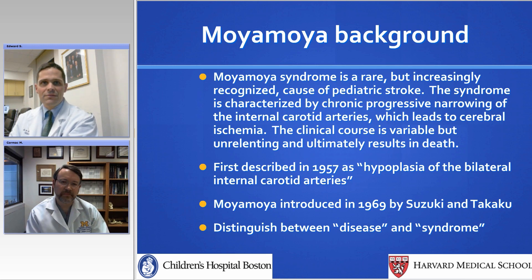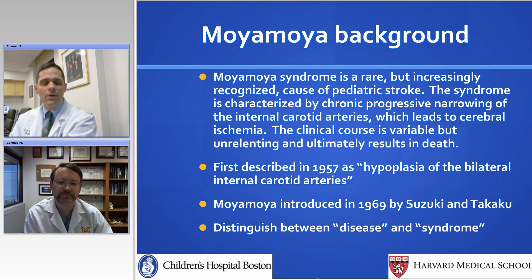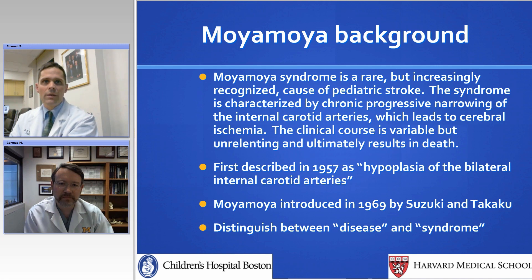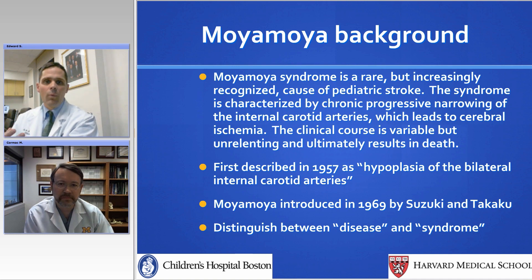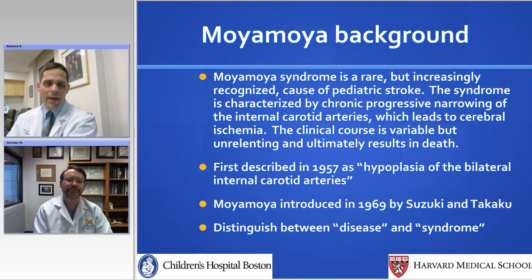It was first described in 1957, and then the name itself — which means puff of smoke in Japanese, based on how it looks on an arteriogram — was described by Suzuki in 1969. One thing worth knowing is the difference between moyamoya disease, which is the classic bilateral moyamoya arteriopathy with no other associated conditions, and moyamoya syndrome, which is the arteriopathy either unilateral or bilateral, often with another associated disease.